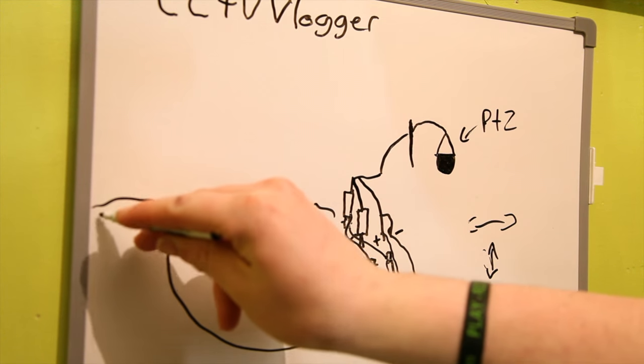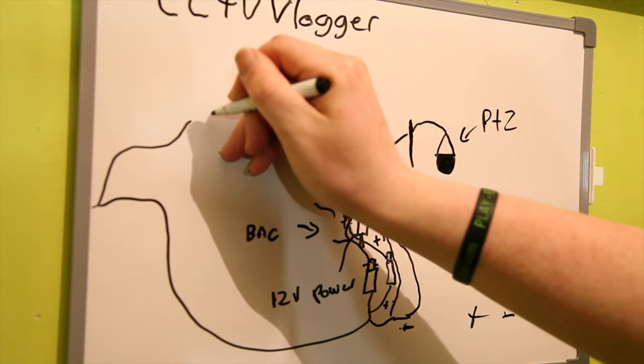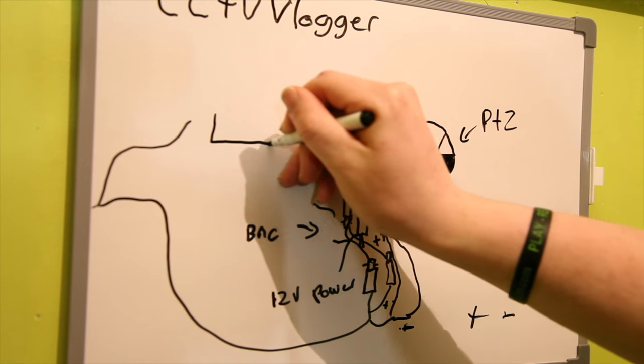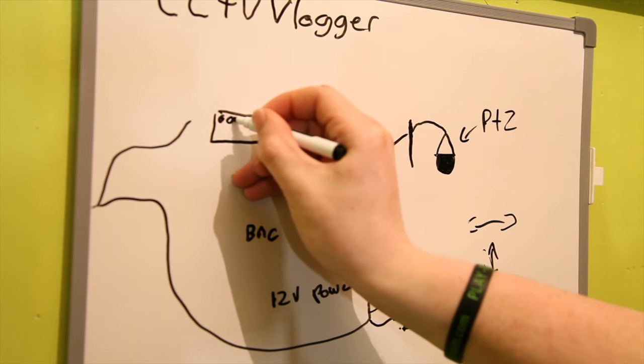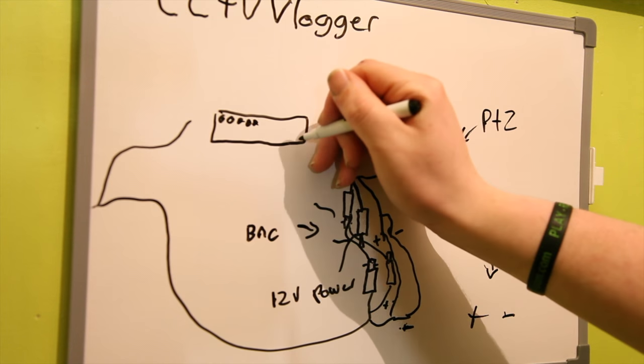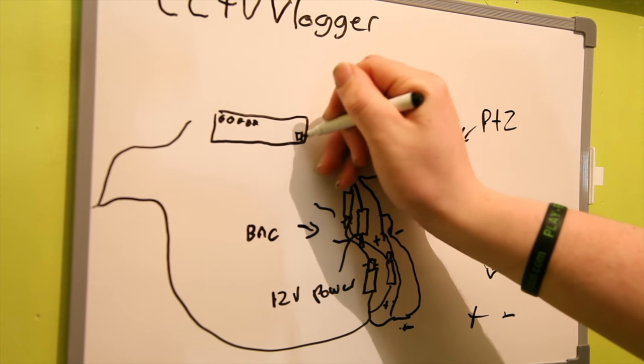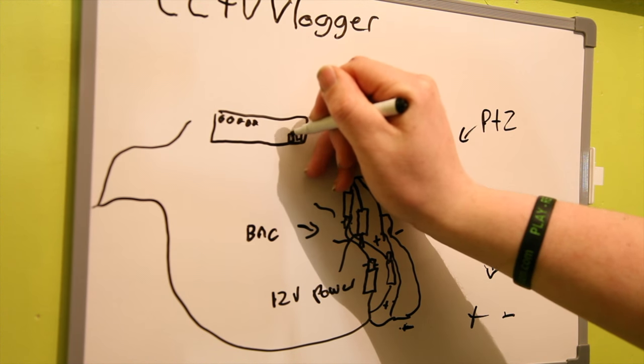So here we go - follow the wire. It comes into the back of the DVR unit. You've got your normal BNC, whatever channel system you've got. You have a power for your DVR, and then somewhere around here you should have a little green block.